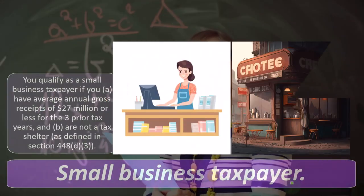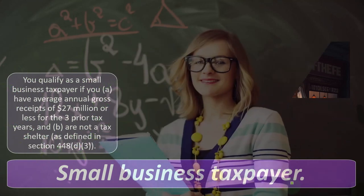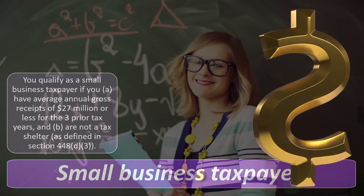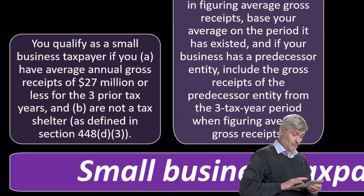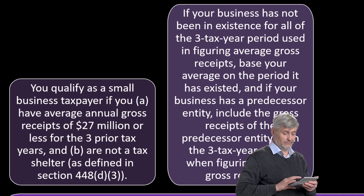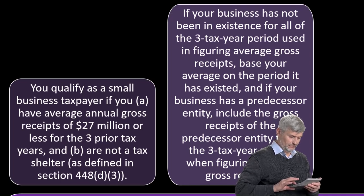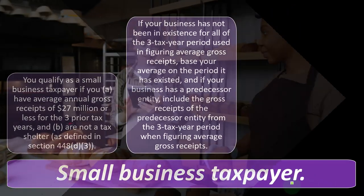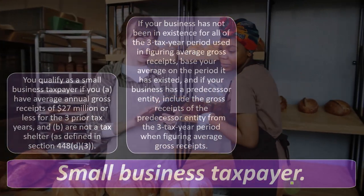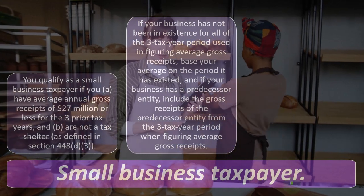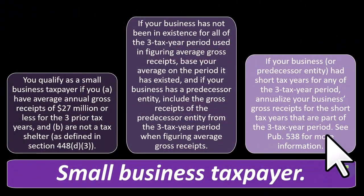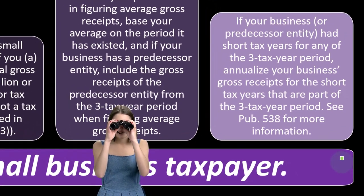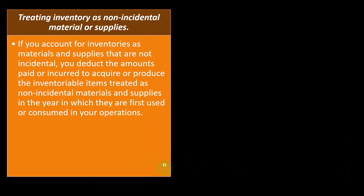Small business taxpayers: you qualify as a small business taxpayer if you (A) have average annual gross receipts of $27 million or less for the three prior tax years, and (B) are not a tax shelter as defined in section 448(d)(3). If your business has not been in existence for all three tax years, base your average on the period it has existed. If your business has a predecessor entity, include the gross receipts of the predecessor entity from the three-tax-year period when figuring average gross receipts. You can see Publication 538 for more information.